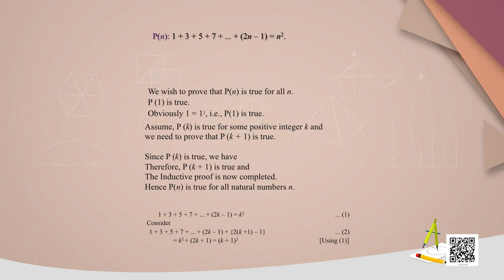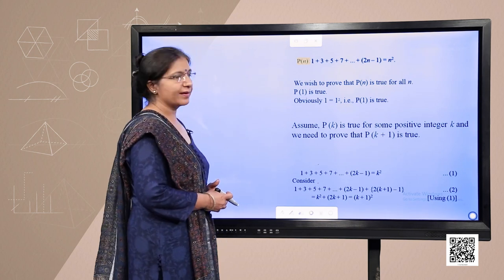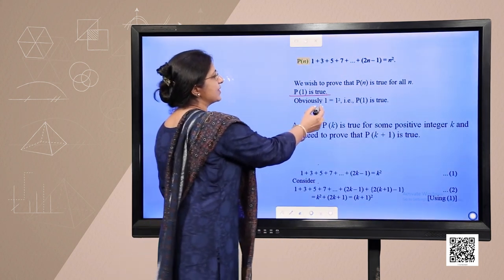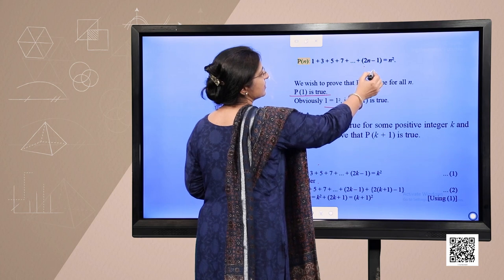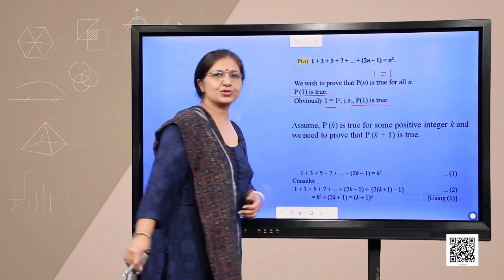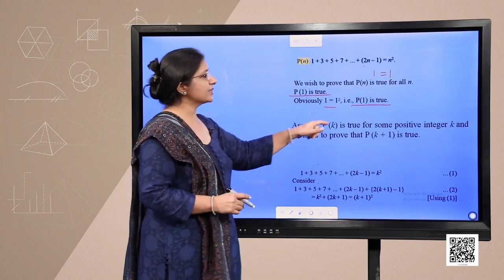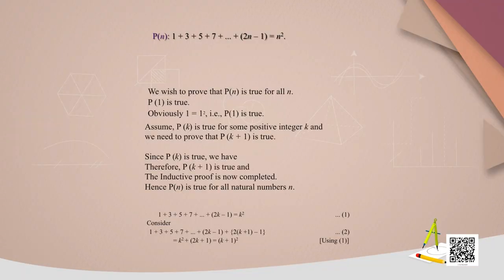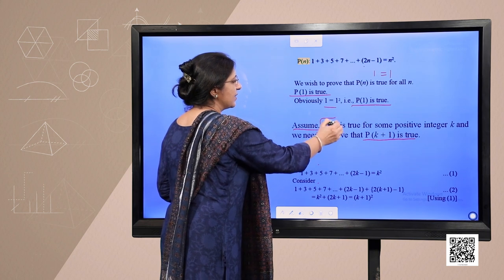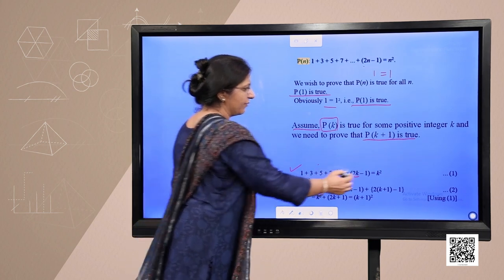P(n) is the statement: sum of n odd numbers equals n². We wish to prove P(n) is true for all n. For n=1: substituting, the left-hand side gives 1 and the right-hand side also gives 1, so P(1) is true — this is the basic step. Now assume P(k) is true for some positive integer k; that is, 1+3+5+...+(2k-1) = k². This is statement 1. We need to prove P(k+1) is also true.